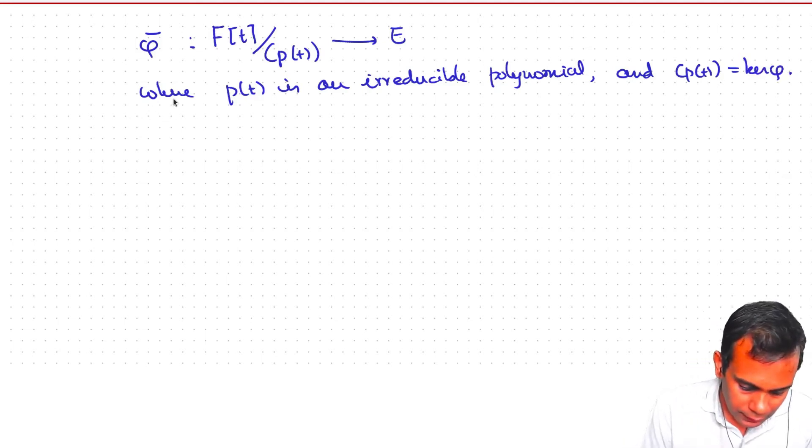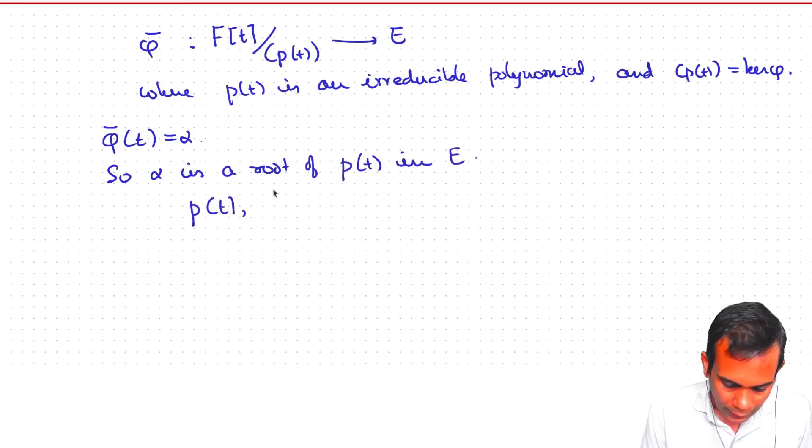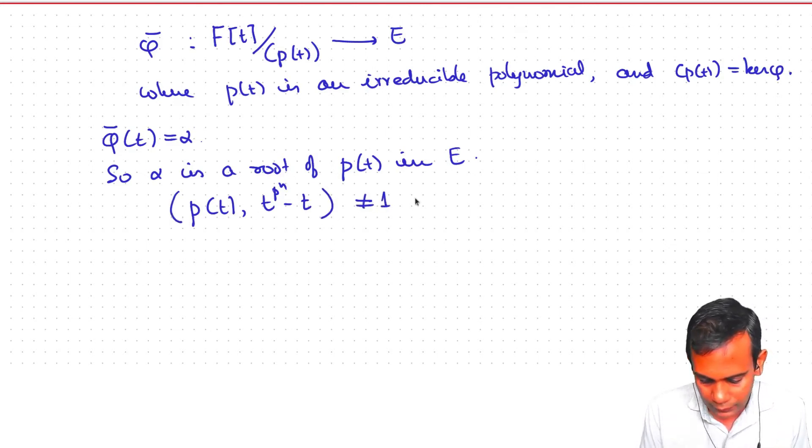Now suppose we write, so what we know is that phi bar of T is alpha and so alpha is a root of Pt in E. This means that the GCD of Pt and T to the p to the n minus T, alpha is also root of T to the p to the n minus T because the elements of E are precisely all the roots of T to the p to the n minus T. This is not equal to 1 in E.